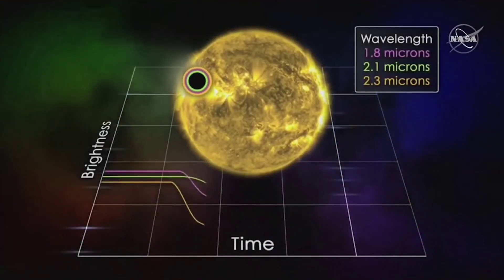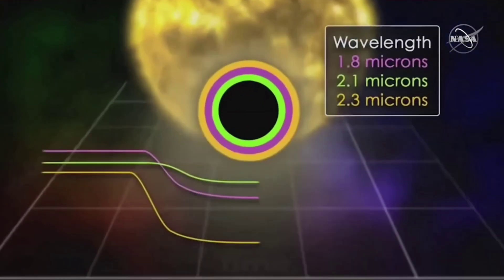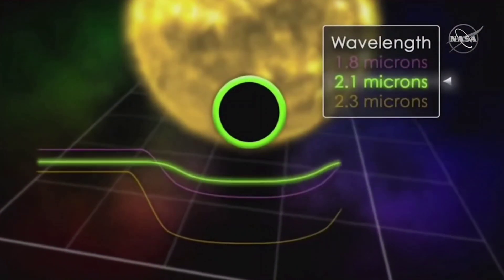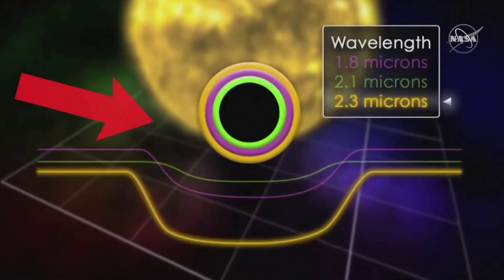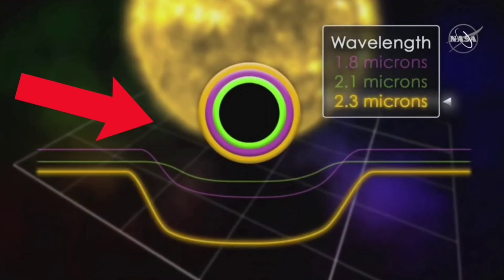In comparison to Earth-based observatories, JWST wavelength coverage is particularly well suited to researching chemicals in extraterrestrial atmospheres, and the lower infrared background from space.